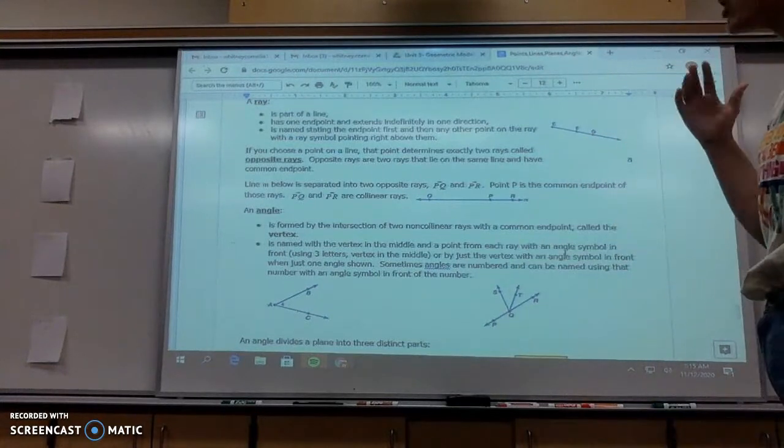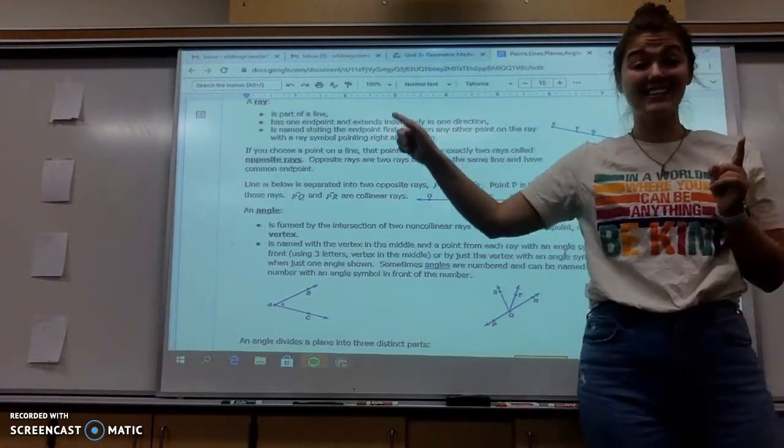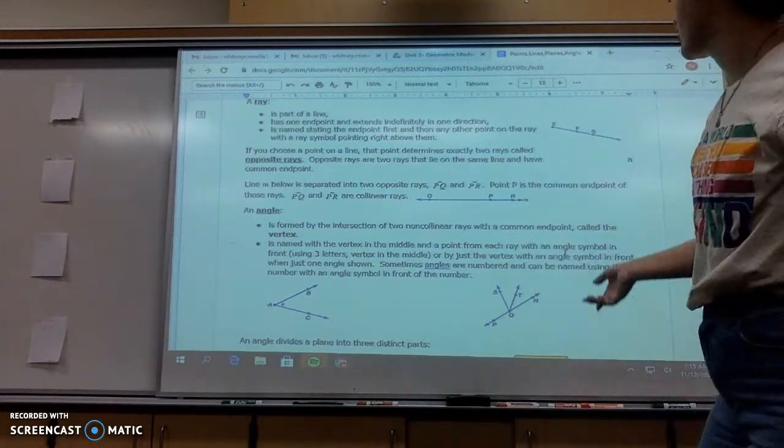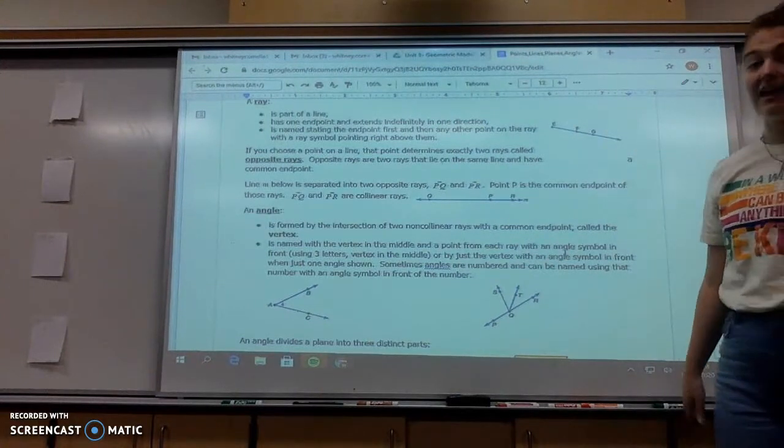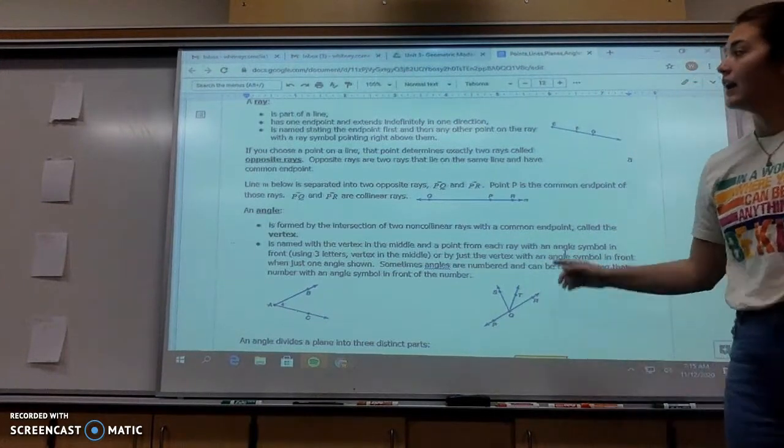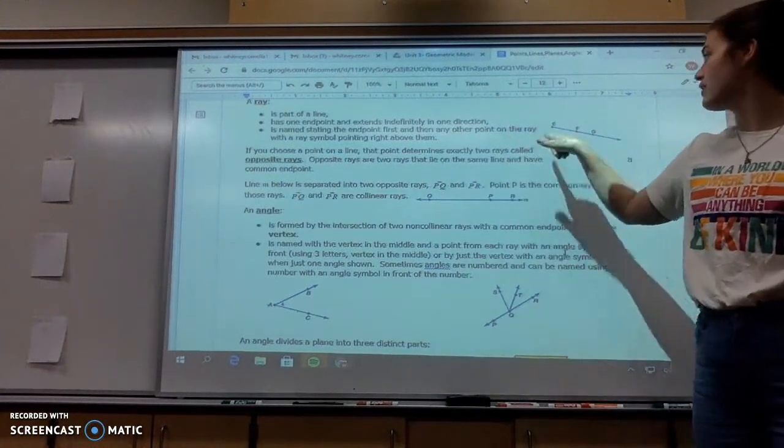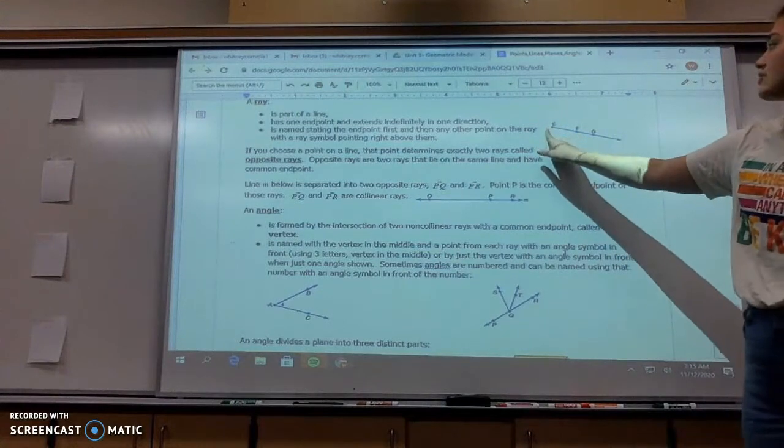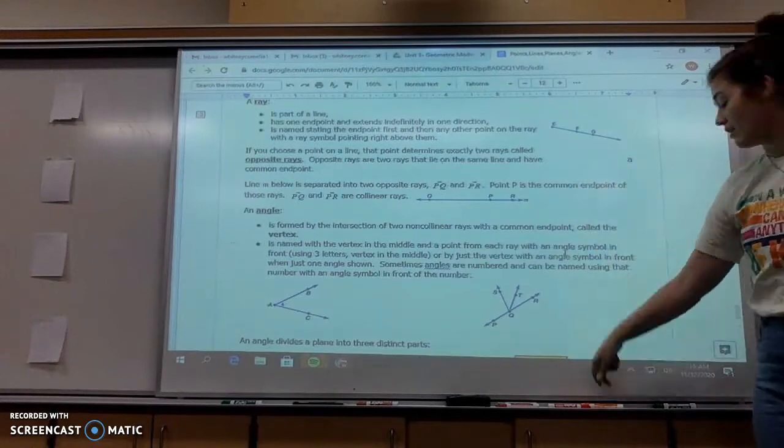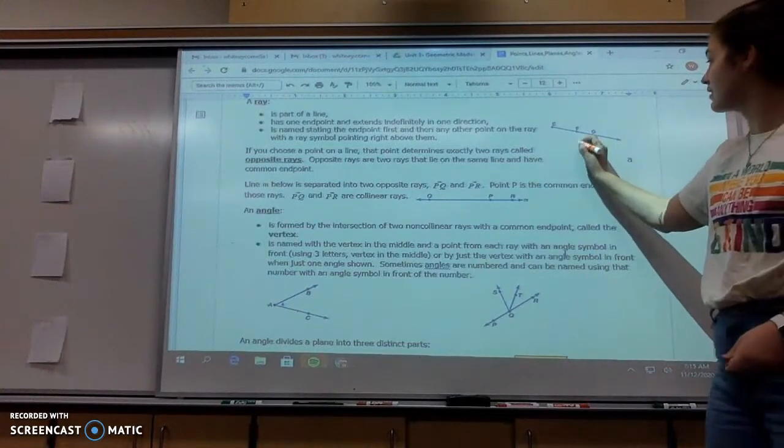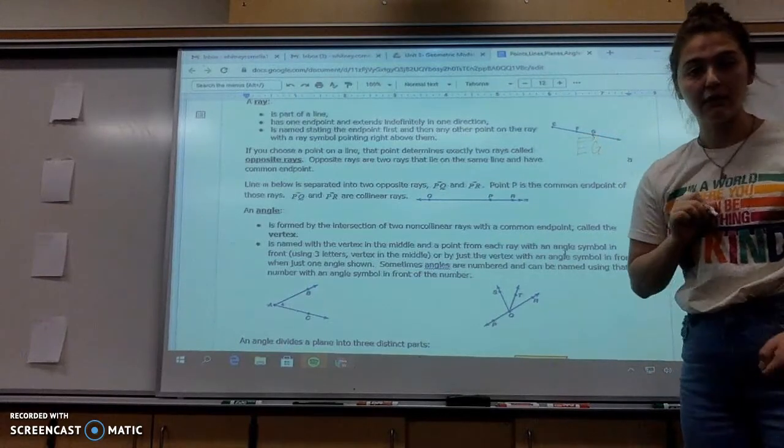A ray is a part of a line. It has one endpoint and it extends out indefinitely in one direction. So we see something like this. It's named by stating the endpoint first and then the other point the way the symbol goes. So for this one right here, this would be ray EG, denoted like this. EG with an endpoint and arrow going that way.